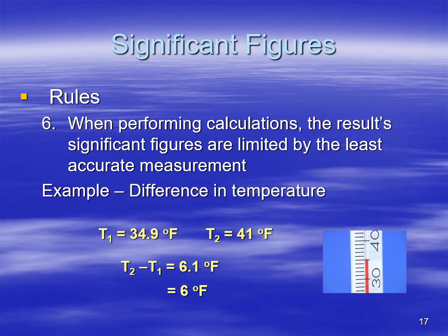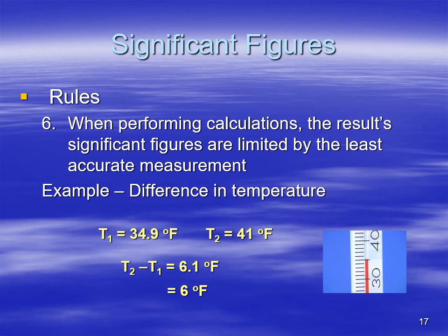Rule number six also applies here: the result's significant figures are limited by the least accurate measurement. If you have two measurements — one to the tenth of a degree Fahrenheit and another to just a degree Fahrenheit — when you take the difference you get 6.1, but your least accurate measurement is 41 degrees Fahrenheit, not 41.0. We're uncertain in that last digit, the 1 of 41. So you wouldn't carry the result to a tenth of a degree — it would be 6 degrees Fahrenheit.